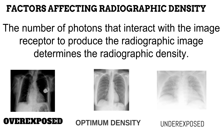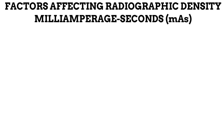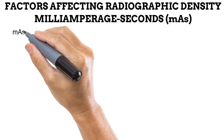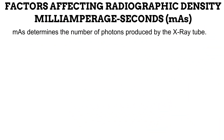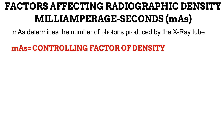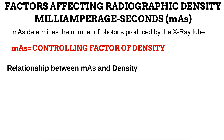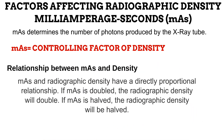In radiography, we usually aim for a density that is just right. The first factor is the milliampere-second, or MAS. The MAS determines how many photons are produced by the X-ray tube, making it the single most important factor affecting radiographic density — it is known as the controlling factor. Other factors we'll discuss are known as influencing factors. MAS and density have a directly proportional relationship: if the MAS is doubled, the radiographic density is doubled; if the MAS is halved, the radiographic density is halved.